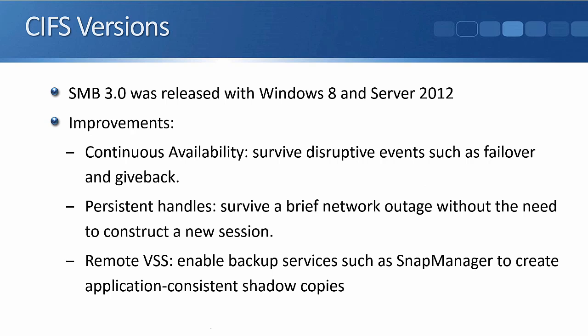SMB version 3.0 was released with Windows 8 and Windows Server 2012. The improvements include continuous availability — it can survive disruptive events such as failover and giveback — which means it can survive failovers on our NetApp systems. It also supports persistent handles, where it can survive a brief network outage without the need to construct a new session.